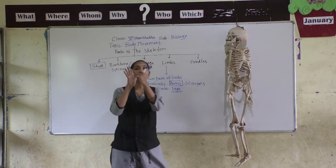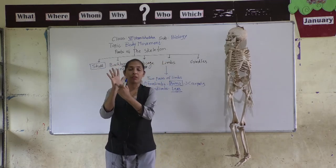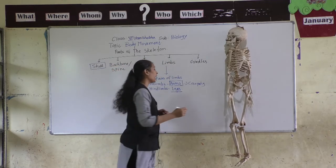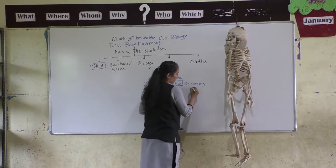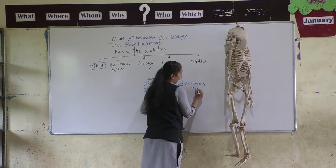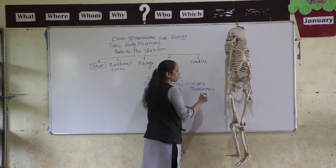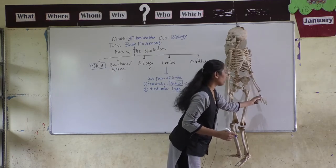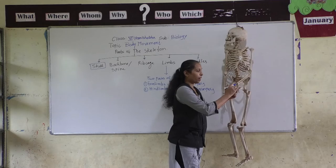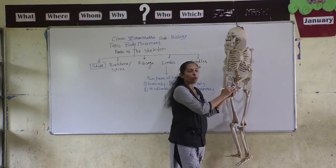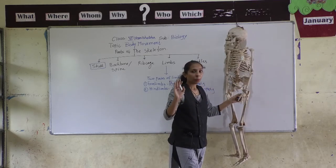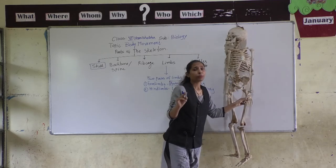Our palm is made up of five bones, and they are called Metacarpals. So our palm is made up of five bones called metacarpals.